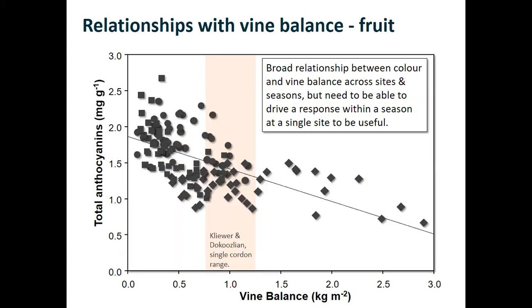If I take the entire dataset — anthocyanins for each season, each site, each treatment — and plot all of those against our vine balance calculation, it does appear that we've got quite a strong relationship between anthocyanins in the fruit at harvest and vine balance. I've also plotted one of the main published estimates of an ideal vine balance for ripening an Australian sprawl canopy, by Clu and de Kuzlian in the US. However, this is the total dataset across all three seasons and all three sites.